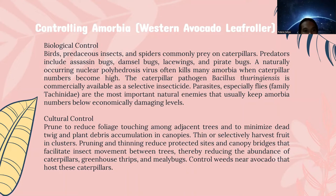The first control method for Amorbia, or Western avocado leafroller, is biological control. Birds, predaceous insects, and spiders commonly prey on caterpillars, including assassin bugs, damsel bugs, lacewings, and pirate bugs. A naturally occurring nuclear polyhedrosis virus often kills many Amorbia when caterpillar numbers become high. The caterpillar pathogen Bacillus thuringiensis is commercially available as a selective insecticide. Parasites, especially flies of family Tachinidae, are the most important natural enemies that keep Amorbia numbers below economically damaging levels.